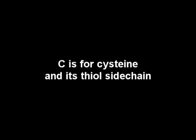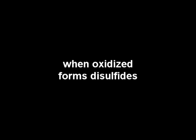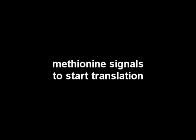C is for cysteine and its thiol side chain. When oxidized, forms disulfides. Methionine signals to stop translation — it's famous codon AUG.